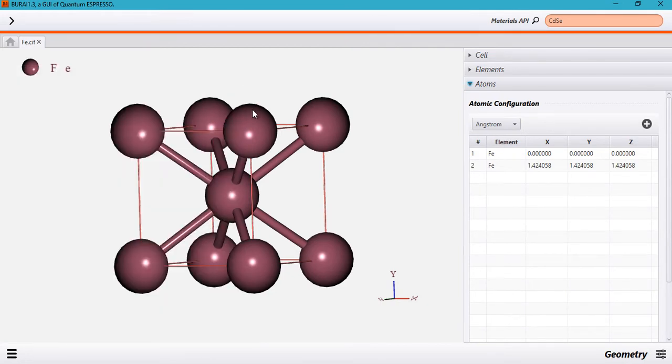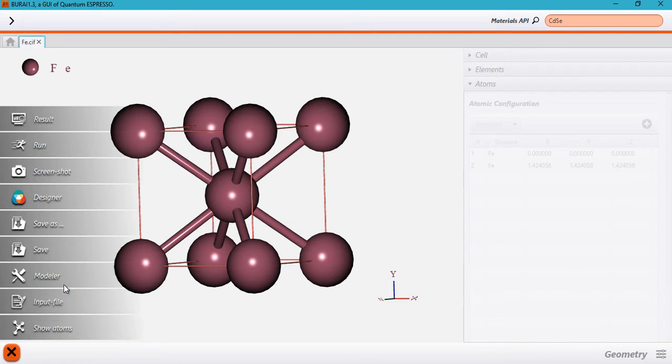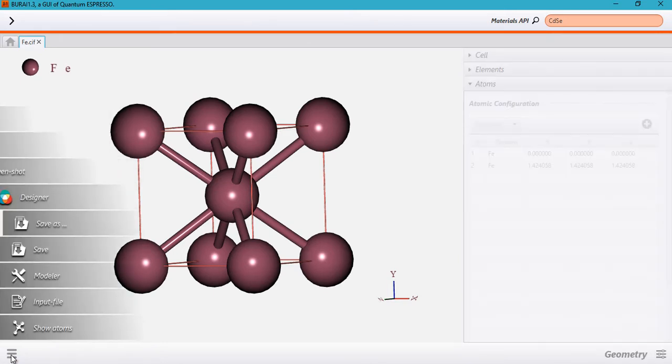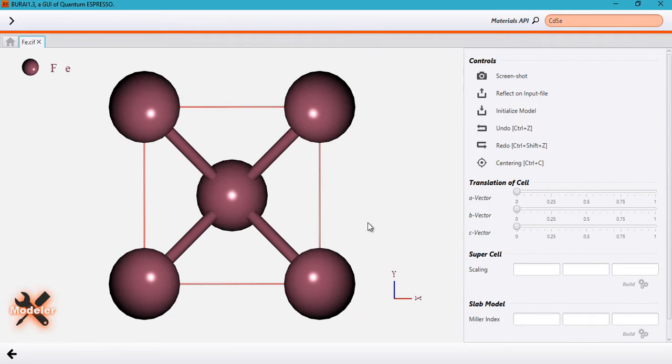That was a quick review of the last tutorials and we can perform doping by deleting or replacing these atoms here. Now coming to this tutorial, we will be working with the modeler. So just go ahead and click here and go to the modeler and this can be used to create a supercell.